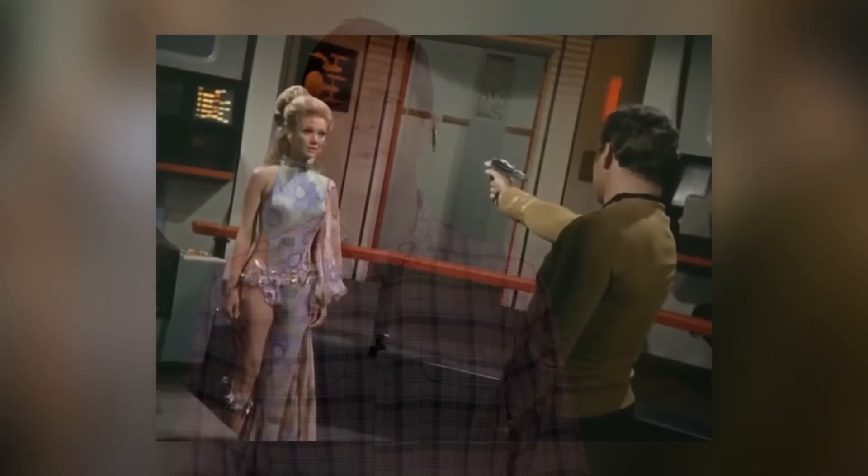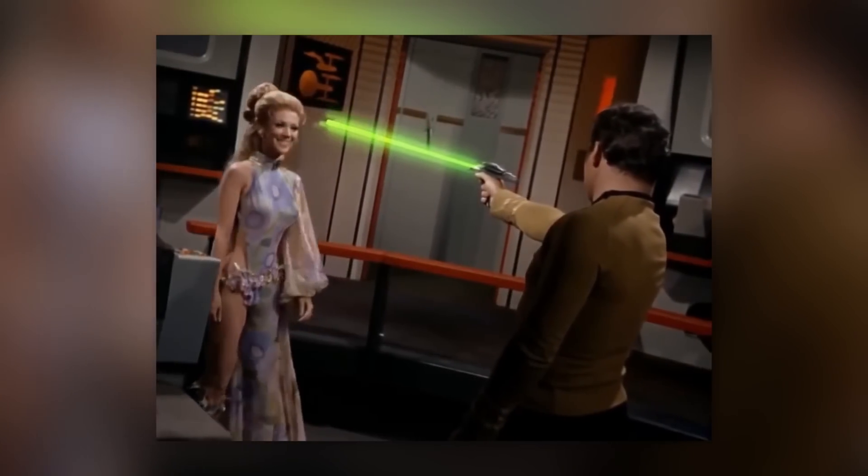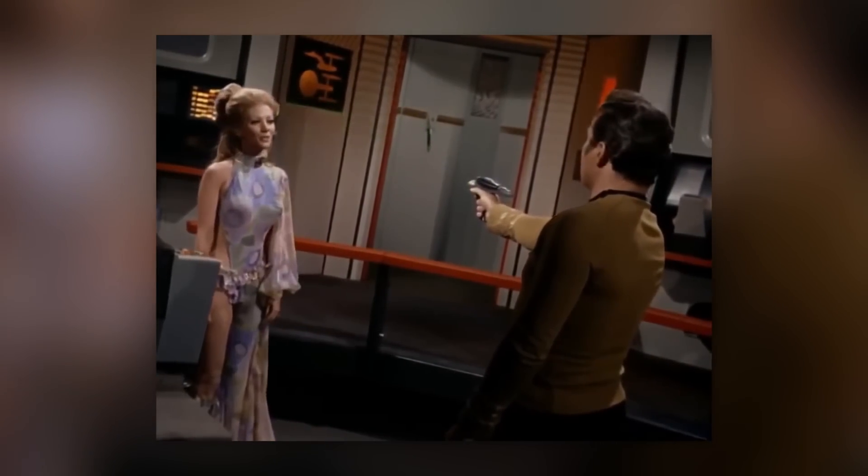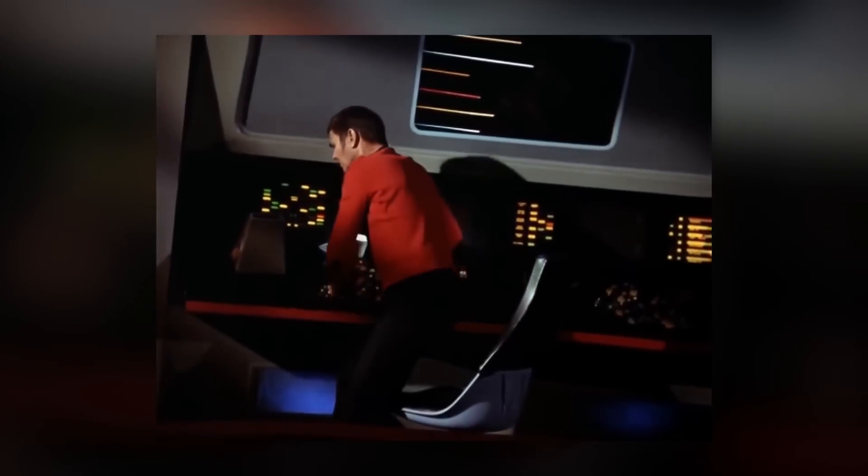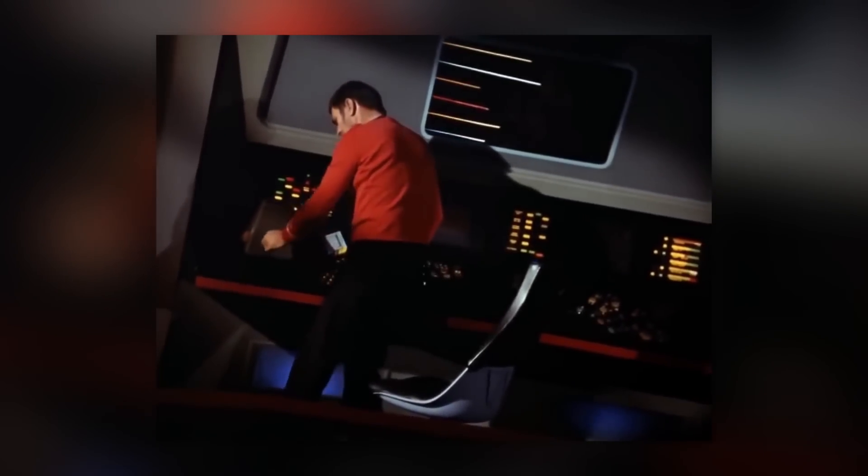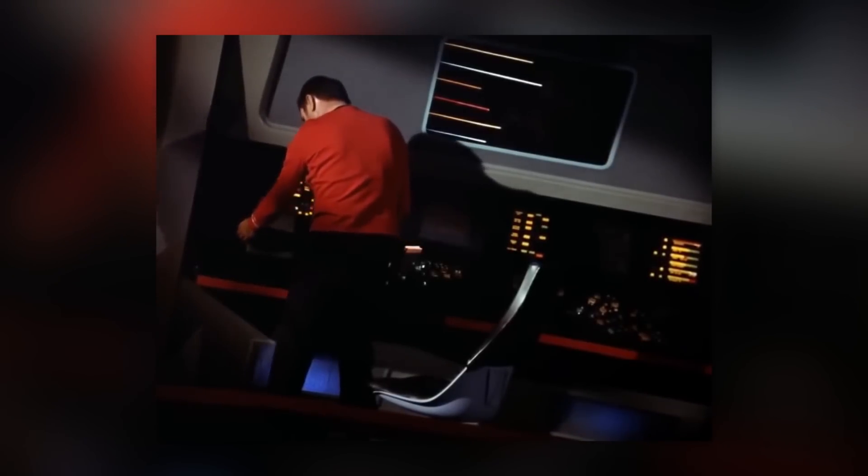Have you ever seen that old classic Star Trek episode, A Wink of an Eye, where the Enterprise crew encounters this race of aliens that move so fast that by comparison the Enterprise crew seems to not move at all? They're kind of like plants to these aliens.